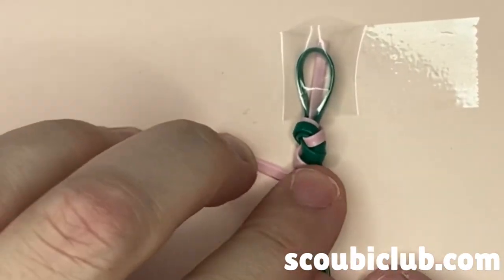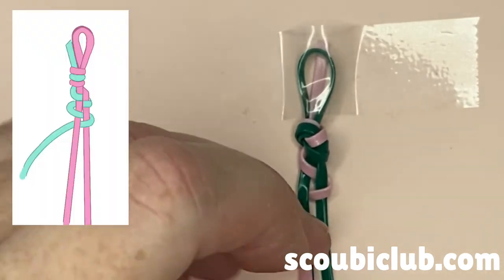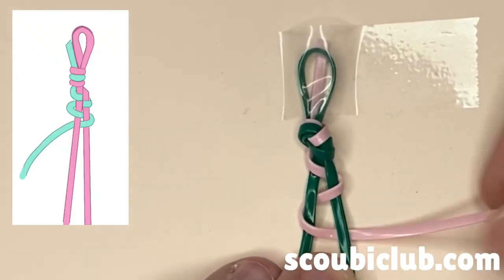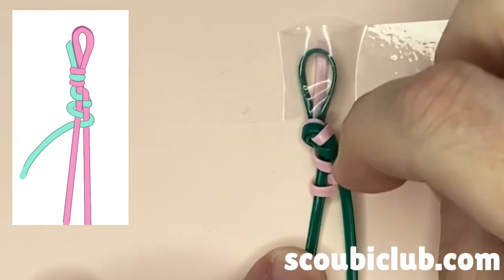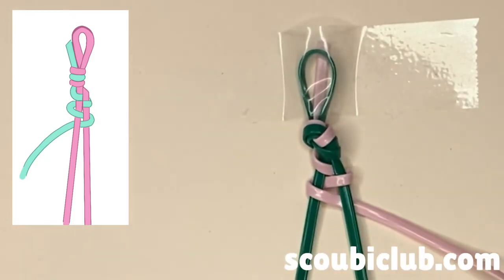And then we continue to repeat this pattern of folding over the first, under the second, and flattening it. Moving it up so that the long strands are horizontal.